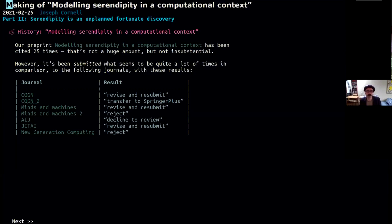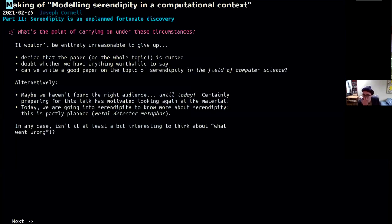But anyway, yeah, it's every time we get quite optimistic, then our dreams are crushed. So what's the point of carrying on under these circumstances? Maybe we should just give up, but we can decide that the paper or indeed the whole topic of serendipity, modeling serendipity in a computational context, perhaps is a cursed topic, or doubt that we have anything worthwhile to say about it, or whether we have the capability to write a good topic of serendipity in the field of computer science. Maybe it's just a bad fit. Or maybe we just haven't found the right audience.